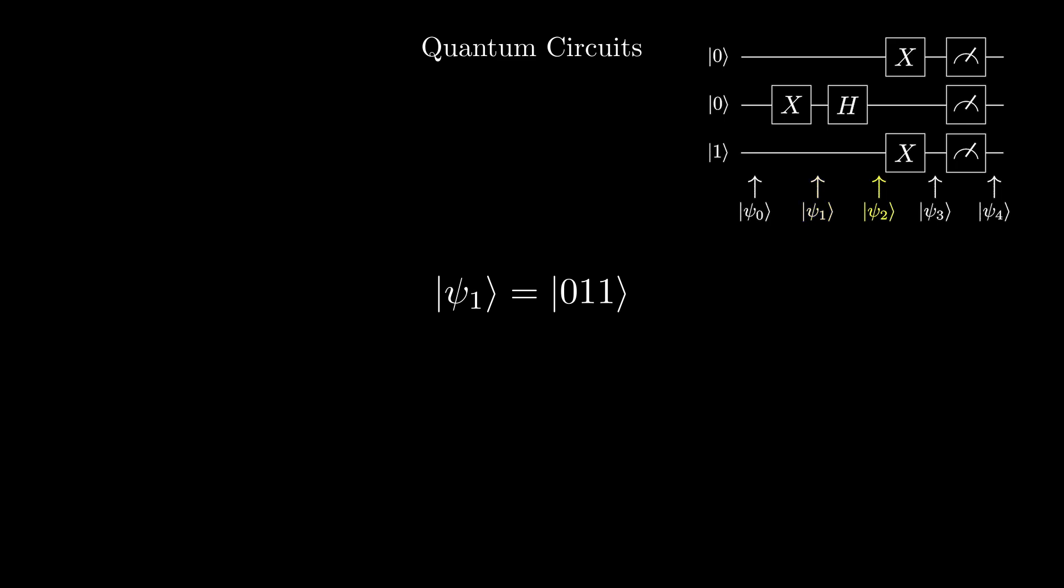At psi sub 2, we apply a Hadamard gate to the second qubit, giving us this state. Then at psi sub 3, we apply an x-gate to both the first qubit and the third qubit, giving us this state.